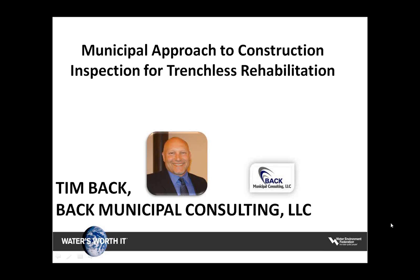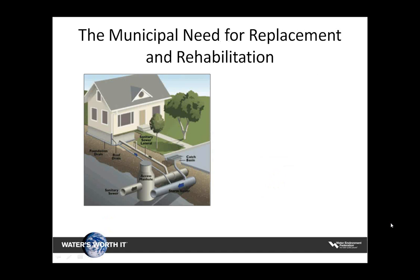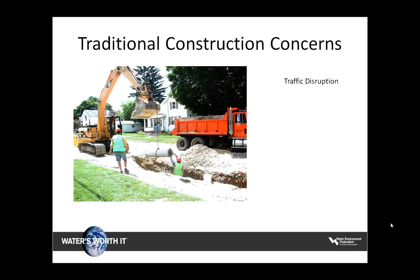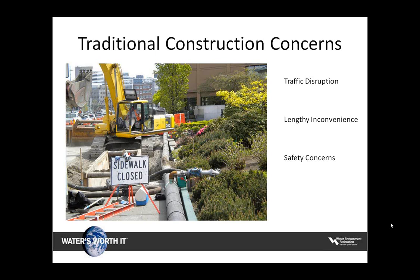My presentation today takes a look at the municipal side of inspection for trenchless rehabilitation. Today, municipalities are facing the ongoing problem of failing infrastructure. In an effort to effectively convey and treat sewage, municipalities are constantly renewing old components — typical components in need of repair include sewer mainlines, laterals, manholes, and main-to-lateral connections. Traditional construction consists of digging a trench to expose the failed components and then replacing or repairing them, raising concerns about traffic disruption, lengthy inconvenience to residents, and safety concerns.